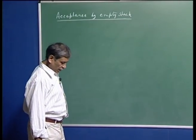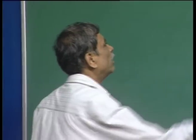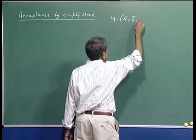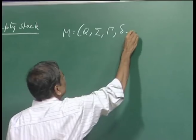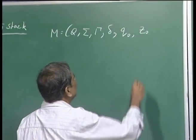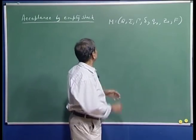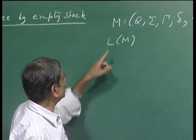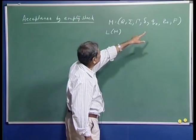Last time we explained that we have two notions of acceptance for PDAs. Suppose I have a PDA which has a set of states Q, sigma is the set of input symbols, gamma is the stack alphabet, delta is the transition function, Q0 is the initial state, Z0 is the initial stack symbol, and F is the set of final states. For such a machine, we explained what the language accepted by final states was: all strings which can take the machine from the initial state to one of the final states.